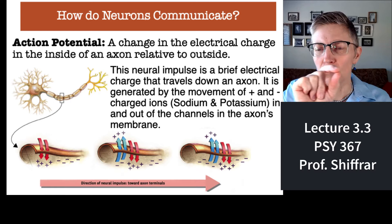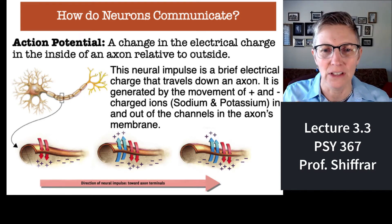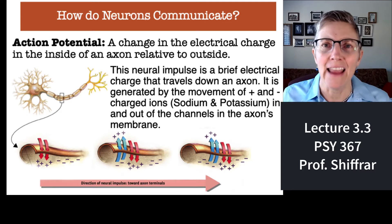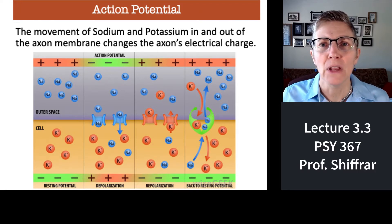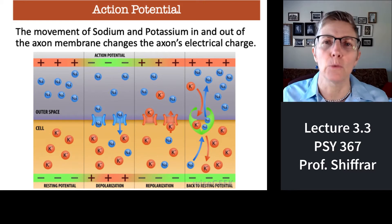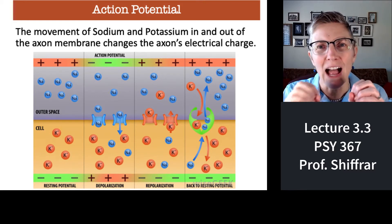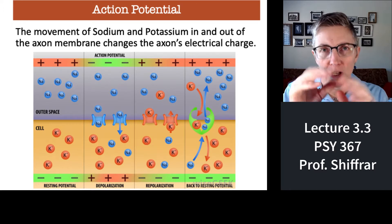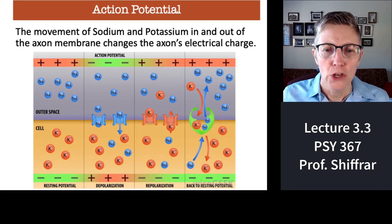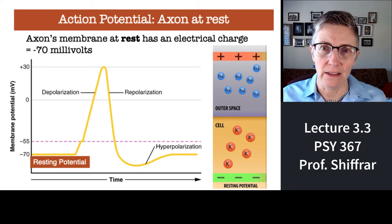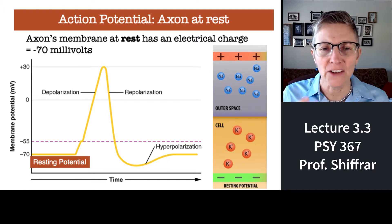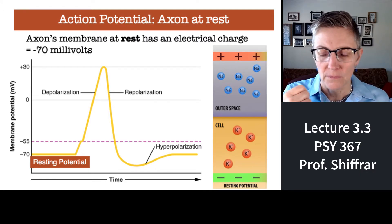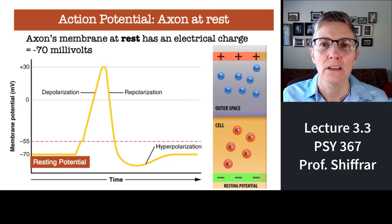That creates an electrical potential that rides down the length of the axon. It's created by ions — sodium and potassium ions — moving in and out of the membrane of the axon. This slide shows the different stages of an action potential. There are little ions rushing in and out via gates that open and close in the membrane of the axon. When the axon's not doing anything, the action potential has a resting potential that's negative: minus 70 millivolts.